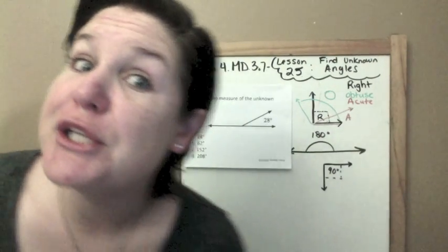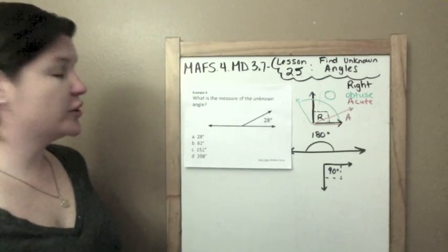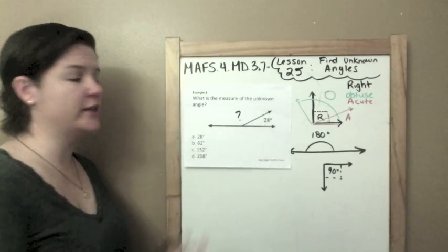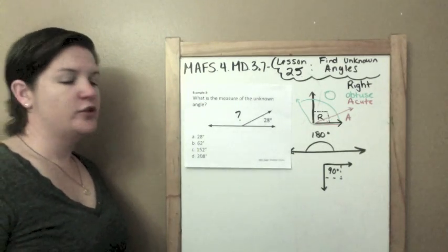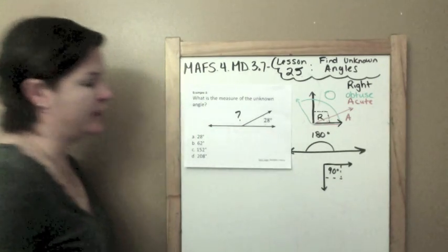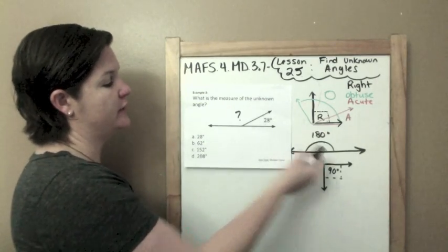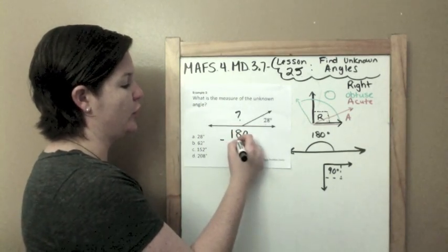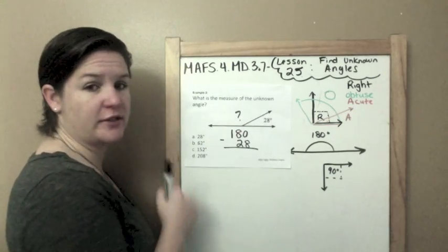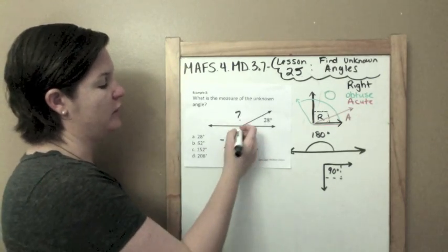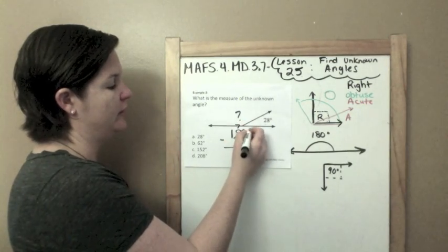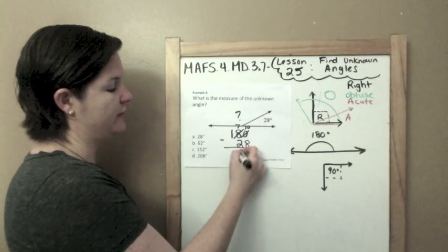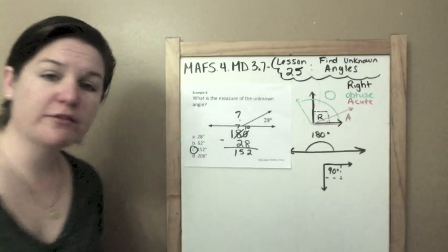Example 3. What is the measure of the unknown angle? Here's 28 and here would be where my unknown angle is. I don't know what the measure of this is. So again, we have a straight line and a straight line measures 180 degrees. I know that this angle is 28 degrees. So if I subtract 180 from what I know, I should figure out the rest of it. What I don't know. So 0 minus 8. We can't do that. So we need to regroup over here. 8 becomes a 7. 0 becomes a 10. 10 minus 8 is 2. 7 minus 2 is 5. And then we bring this down. So what are we missing? 152.